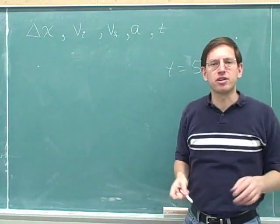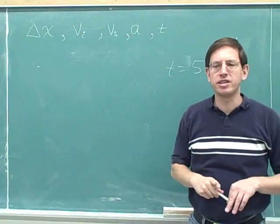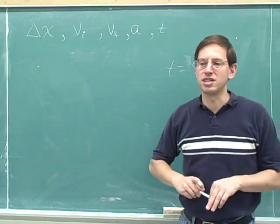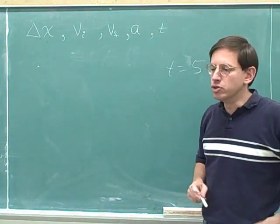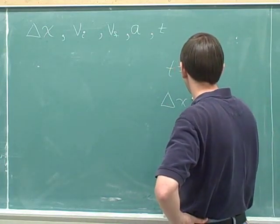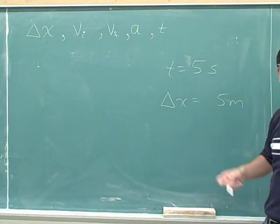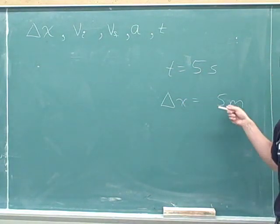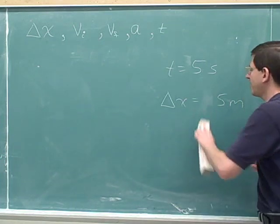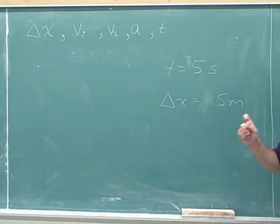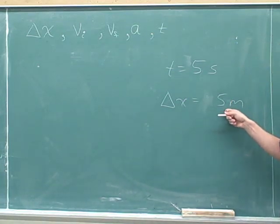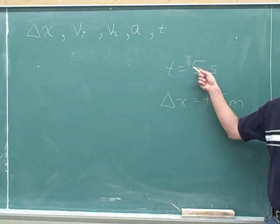However, all the other four variables can be either positive or negative. I insist that every single time you write down a value for displacement, velocity, or acceleration, you must include the sign — not just if it's negative, but also if it's positive. Suppose something moved five meters in the positive direction. Writing the displacement as just five meters is bad; the correct way is to write it as positive five meters. We don't need to worry about the sign for time, but we do for the other four variables.